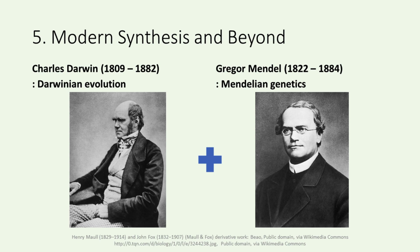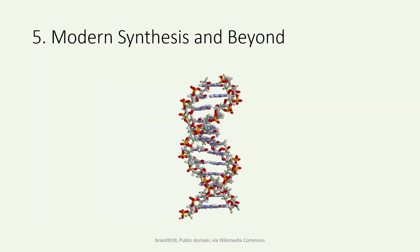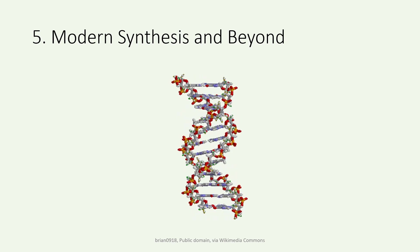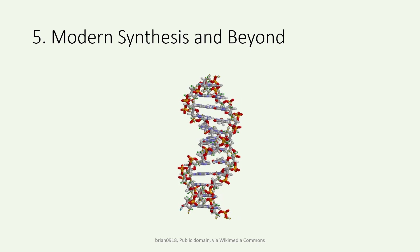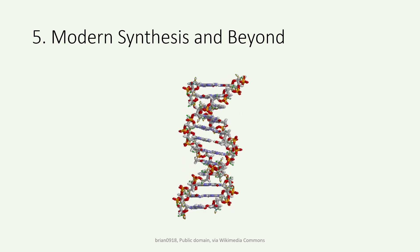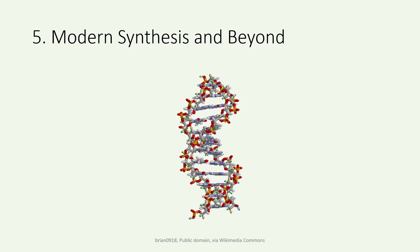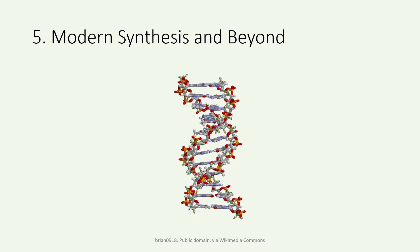As we continue our exploration, it's essential to recognize a pivotal period known as the modern synthesis in the mid-20th century. The modern synthesis integrated Darwinian evolution with the principles of Mendelian genetics, creating a comprehensive framework that explained patterns of biodiversity. This integration was transformative, uniting the study of natural selection with the mechanisms of heredity, and bridging the gap between macroevolutionary patterns and microevolutionary processes. The advent of molecular biology, particularly DNA sequencing, revolutionized our tools for studying taxonomy and evolutionary biology, enabling more precise classification and phylogenetic reconstructions that revealed evolutionary relationships at the molecular level.